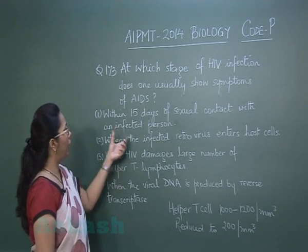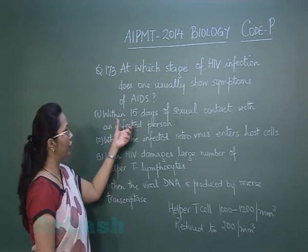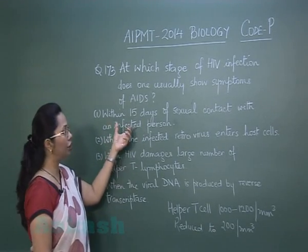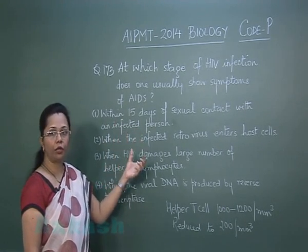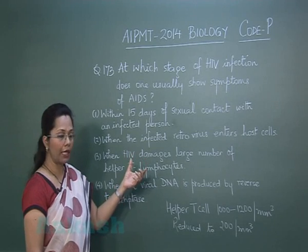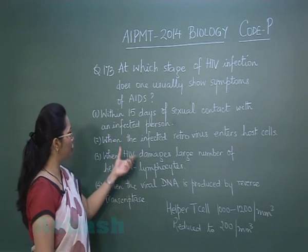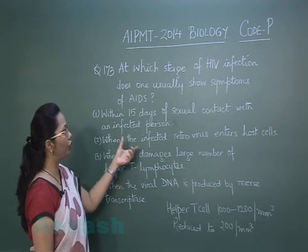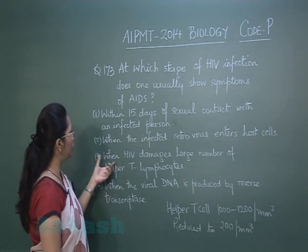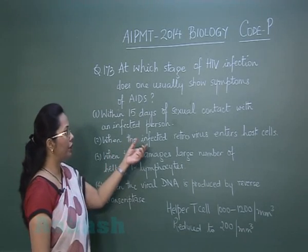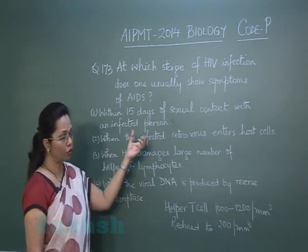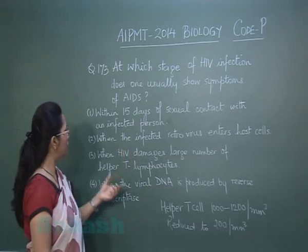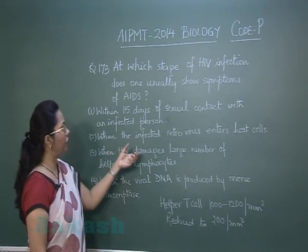With this in view, let's evaluate the options. Option one — within 15 days of sexual contact with an infected person — cannot be true because 15 days is too short a time for the helper T cell count to reduce so much. Option two — when the infected retrovirus enters the host cell — means it has just entered, so there won't be any symptoms as yet.